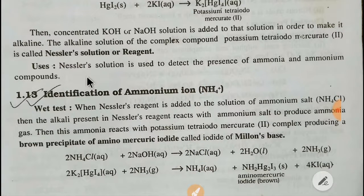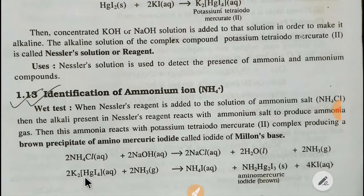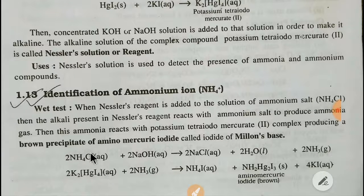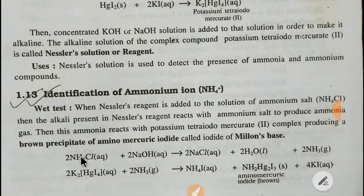Now we will apply Nessler's solution to detect ammonia. When Nessler's reagent is added to a solution of an ammonium salt, such as ammonium chloride, the alkali present in Nessler's reagent reacts with the ammonium salt to produce ammonia gas.